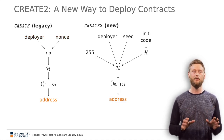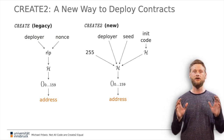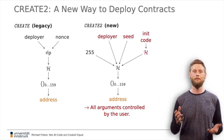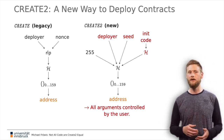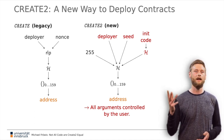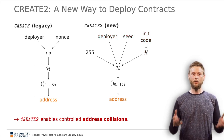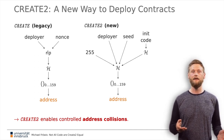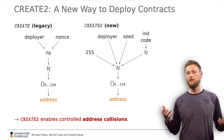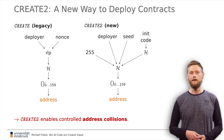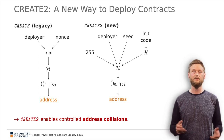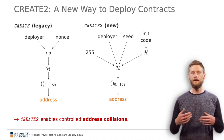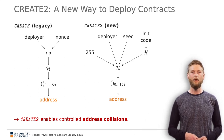One important difference is that all arguments of the CREATE2 address calculation function can be controlled by the user. This means address collisions can be triggered on purpose by using the same values for deployer, seed, and init code in two different transactions. In preparation for CREATE2, EIP-684 was implemented, mandating that transactions creating such a collision have no effect. But there is a way around that: Ethereum supports account deletion via the self-destruct instruction. By first deleting the account, we can circumvent the check introduced by EIP-684, allowing us to reopen a previously deleted account. We call this a resurrection.